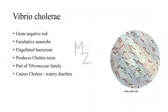Vibrio cholerae is a gram-negative rod. It's a facultative anaerobe, which means it can live both in the presence and absence of oxygen. It's a flagellated bacterium — flagella is a motility apparatus, a hair-like structure — and Vibrio cholerae has one at its one pole, which helps this bacterium to move. So Vibrio cholerae is a motile bacterium. It produces cholera toxin, or choleragin. It is part of the Vibrionaceae family.